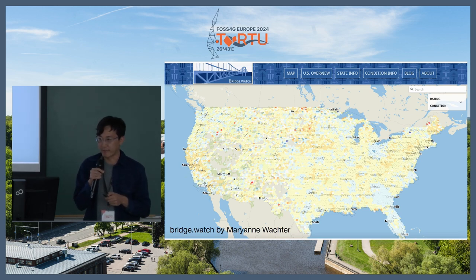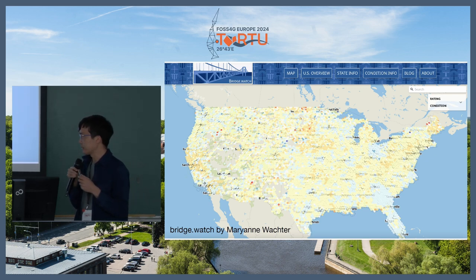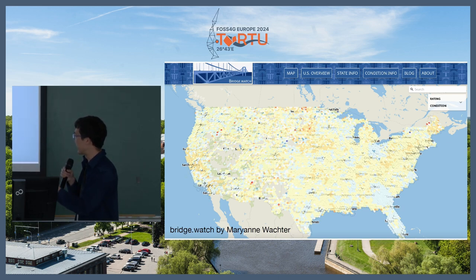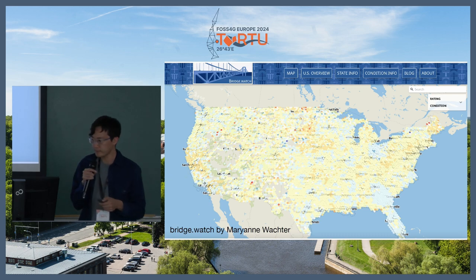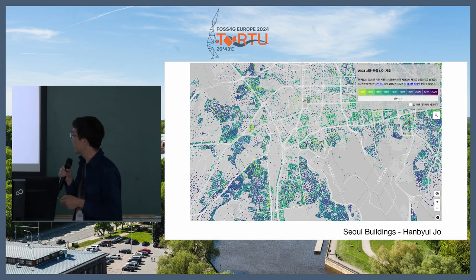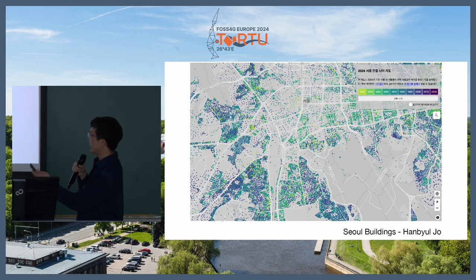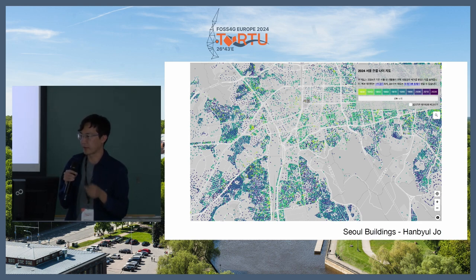Some example use cases that have come up in the past year using Protomaps: BridgeWatch, a civic tech project by Marianne to visualize the health of infrastructure in the United States, specifically bridge health and maintenance. This relies on a hex bin based overlay that is all one PMTiles file. Also, Seoul Building Age by Hanbyul, visualizing the age of hundreds of thousands of buildings in South Korea, delivered as a PMTiles file alongside a base map also cut out for South Korea as a single PMTiles file.